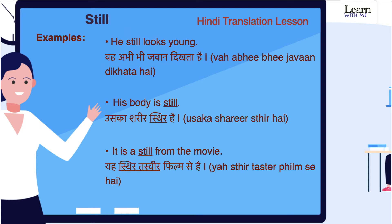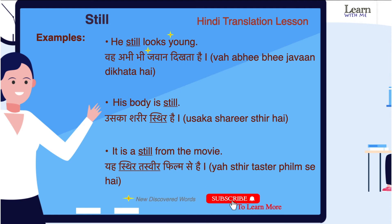Now let us understand through examples. He still looks young — woh abhi bhi jawaan dikhta hai. His body is still — uska sharir sthir hai. It is a still from the movie — yeh sthir tasweer film se hai.